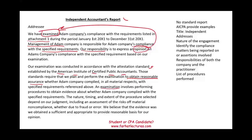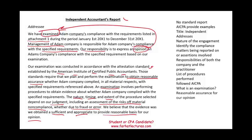An examination involves performing procedures to obtain evidence whether compliance did happen. The nature, timing, and extent of procedures selected depend on our judgment, including an assessment of the risk of material noncompliance, whether that's due to error or fraud. This is an examination — practically all examinations sound similar. We believe the evidence we obtained is sufficient and appropriate to provide reasonable assurance for our opinion. We need sufficient and appropriate evidence because an examination is basically an audit, except we cannot call it an audit because we are not examining historical financial statements.